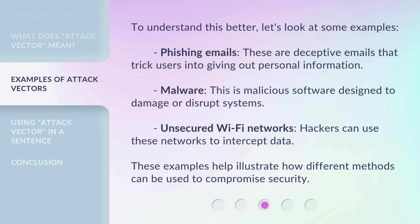To understand this better, let's look at some examples. Phishing emails: these are deceptive emails that trick users into giving out personal information. Malware: this is malicious software designed to damage or disrupt systems. Unsecured Wi-Fi networks: hackers can use these networks to intercept data. These examples help illustrate how different methods can be used to compromise security.